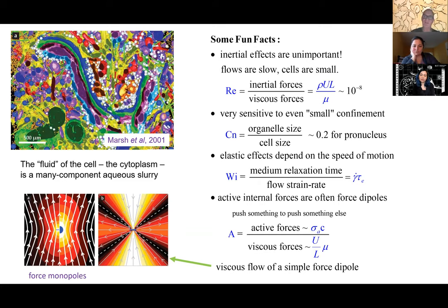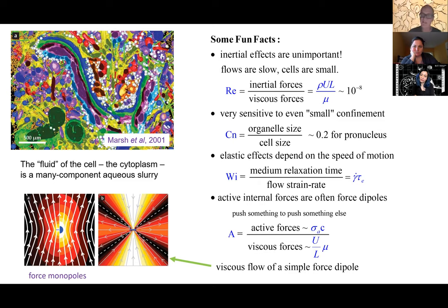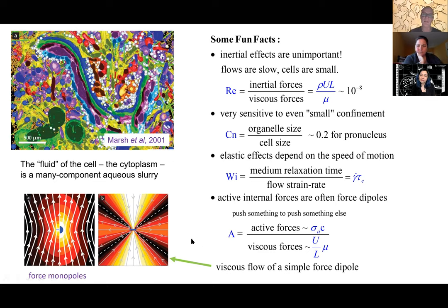There are active forces driving all of this dynamics inside the cell. Unlike a weather system forced from outside, here the forcing comes from things going on inside the cell — active forces from motor proteins moving on things, and things polymerizing. Forces inside the cell are often associated with a force dipole: something has to hold on to something to push on something else, so you have equal and opposite forces everywhere, making it an interesting mechanics problem.